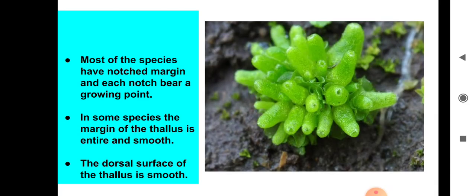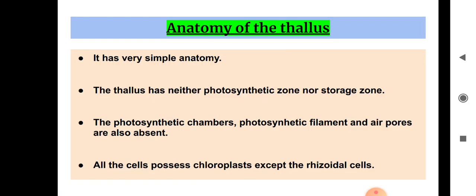Next is the anatomy of the thallus. Sphaerocarpos has a very simple anatomy. The thallus has neither a photosynthetic zone nor a storage zone, unlike Marchantia where the internal structure is very complex.